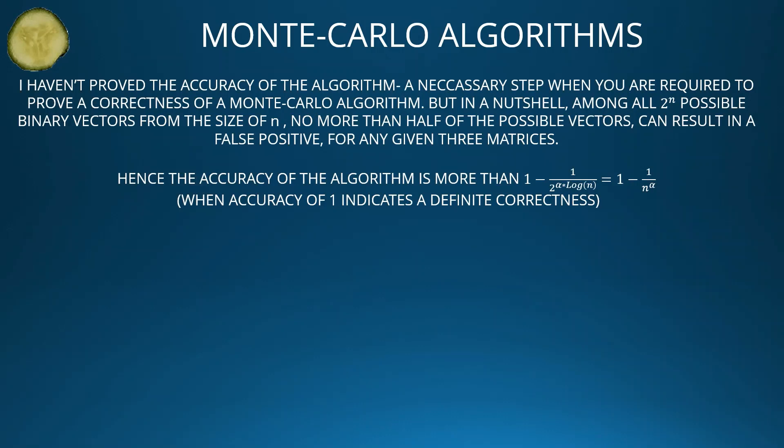I haven't proved the accuracy of the algorithm — a necessary step when required to prove correctness of a Monte Carlo algorithm. But in a nutshell: among all 2ⁿ possible binary vectors of size n, no more than half of the possible vectors can result in a false positive for any given matrices. Hence the accuracy of the algorithm is more than 1 minus 1 divided by 2^(alpha · log n), which equals 1 minus 1/n^alpha, where an accuracy of 1 indicates definite correctness.